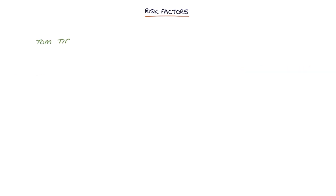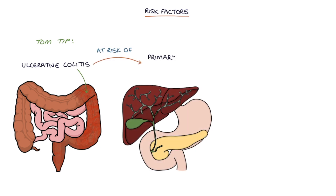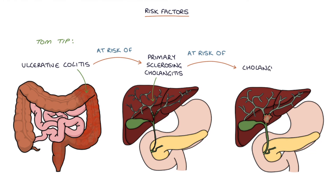A Tom tip for you: patients with ulcerative colitis are at risk of developing primary sclerosing cholangitis. Patients that have primary sclerosing cholangitis are at risk of developing cholangiocarcinoma — about 10–20%. Primary sclerosing cholangitis is the key risk factor that's worth remembering for your exams.